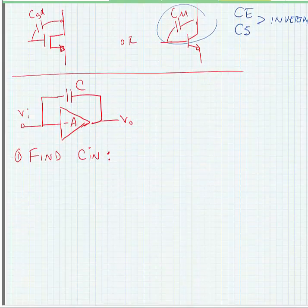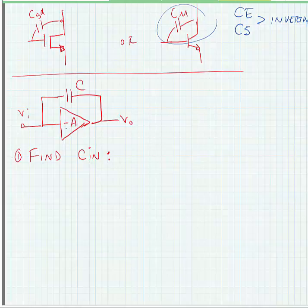So here I've drawn a simple amplifier where I have an inverting amplifier that has a gain of minus A, and I've drawn a capacitor going from the output to the input. What we're going to do is find Cin, which is the capacitance looking in from the input terminal.